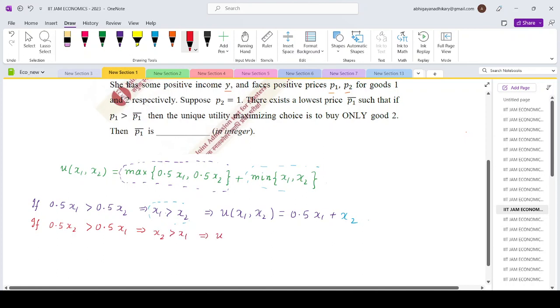So in that case my utility function would become u of x₁, x₂ equals 0.5x₂ for the first part, and since x₂ is greater than x₁, the min part will give us x₁.